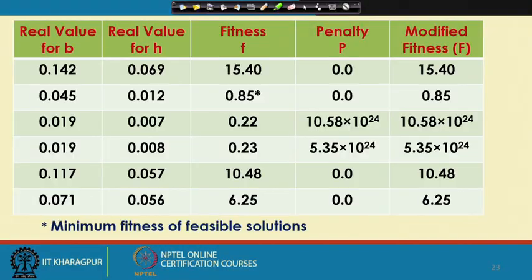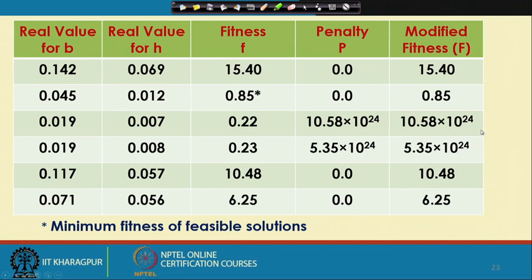We have the fitness information for the whole population of this particular generation, and now we will have to concentrate on the modified fitness values. If I concentrate on the modified fitness values, the modified fitness value for the third and the fourth are very high, but our aim is to minimize this particular objective function. So these two solutions will not be a good solution and we want to delete these two solutions in the mating pool. To get the mating pool, we take the help of a reproduction scheme.